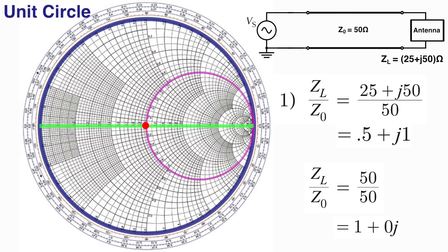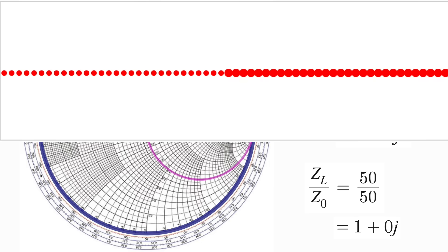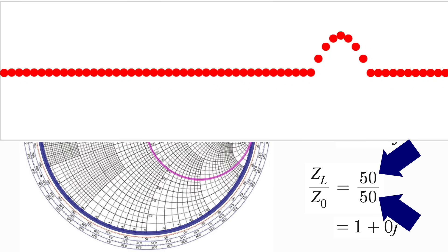This would be like, instead of before where we had different size ropes, we just had a rope tied to an identical rope. Now there will be no reflection because, well, it's all the same rope. So we'd like matched impedances or same size ropes because all the energy gets through to our load.